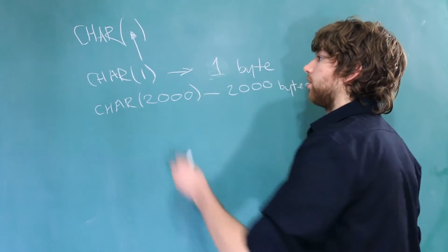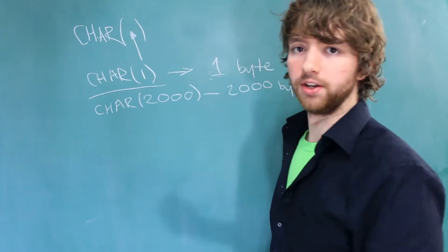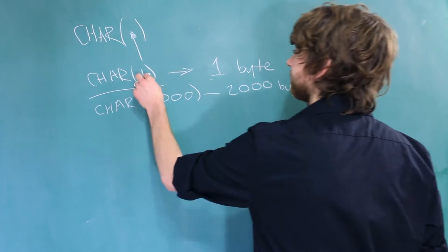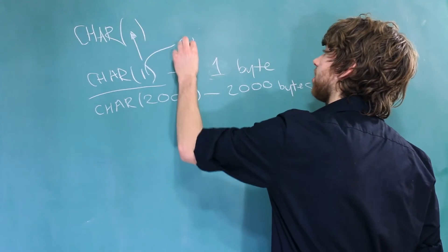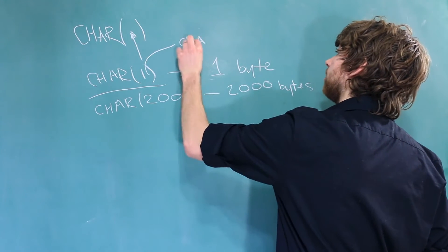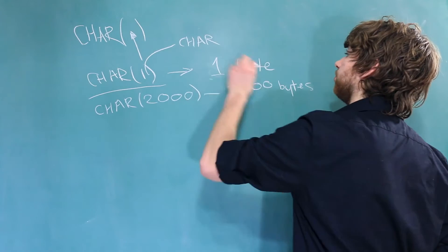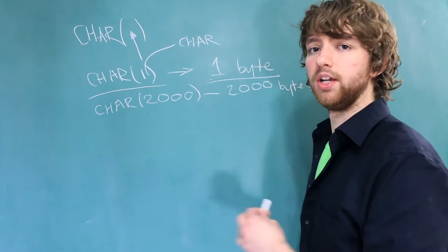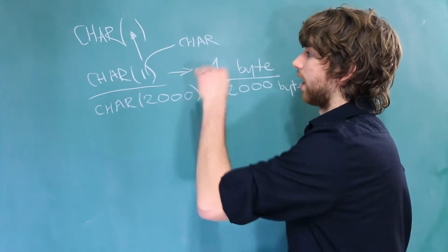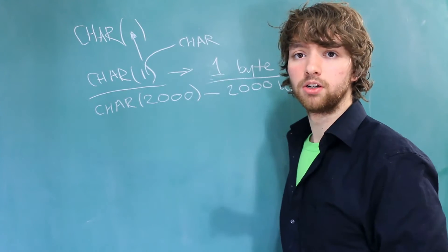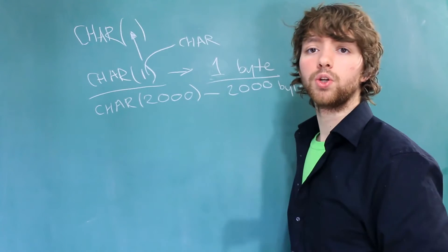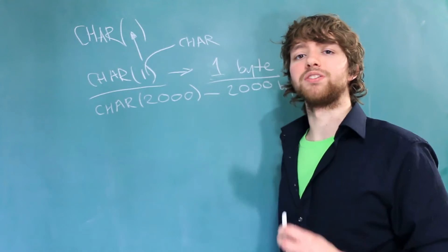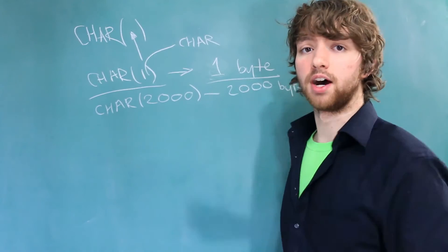For example, if we declare this as CHAR(1) and we don't specify the keyword CHAR here, it allows only one byte. What happens if we try to put an Asian character into that column? We are going to get an error.